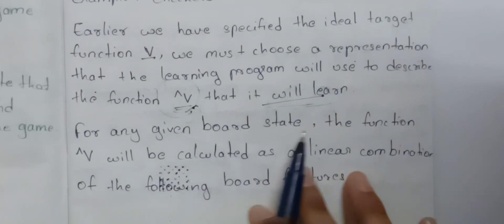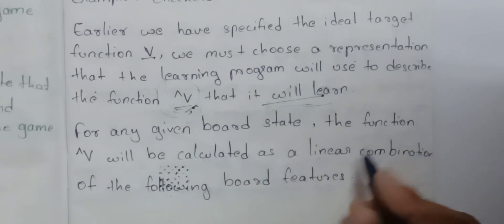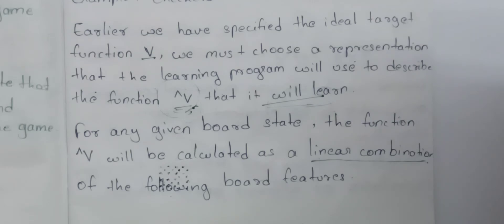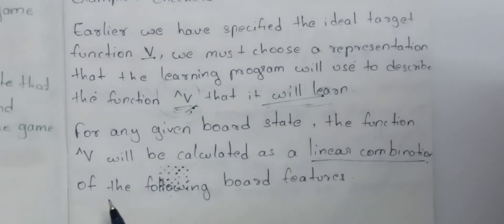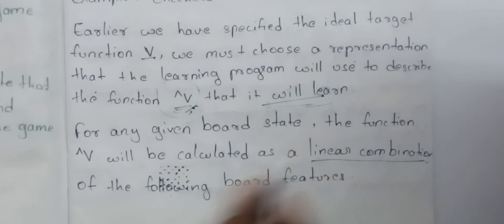For any given board state, the function V' will be calculated as a linear combination. We will have a linear hierarchical graph representation or tabular form, calculated as a linear combination of the following board features.